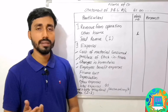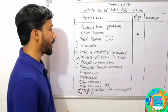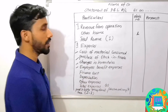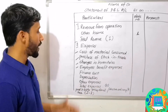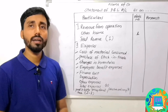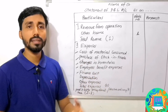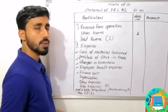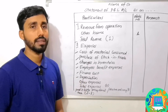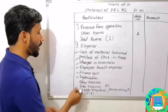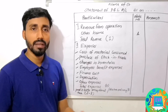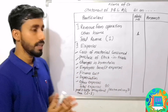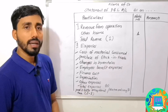The next is Employee Benefit Expenses: salaries, wages, and bonuses. The next is Finance Cost. The next is Depreciation or Amortization. The next is Total Expenses.